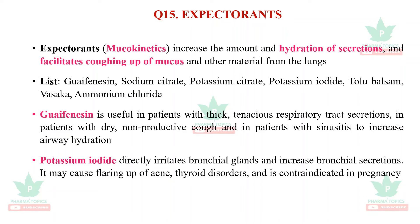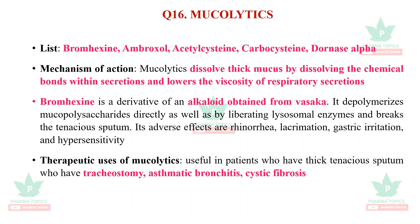Question sixteen is mucolytics. The list includes bromhexine, ambroxol, acetylcysteine, carbocysteine, and dornase alfa. Mucolytics dissolve thick mucus by breaking chemical bonds within the secretions and lower the viscosity of respiratory secretions. Bromhexine is a derivative of an alkaloid obtained from vasaka; it depolymerizes mucopolysaccharides, liberates lysosomal enzymes, and breaks up tenacious sputum. Adverse effects include rhinorrhea, lacrimation, and hypersensitivity. Therapeutic uses: they are useful in patients with thick tenacious sputum, those undergoing tracheostomy, chronic bronchitis, and cystic fibrosis.